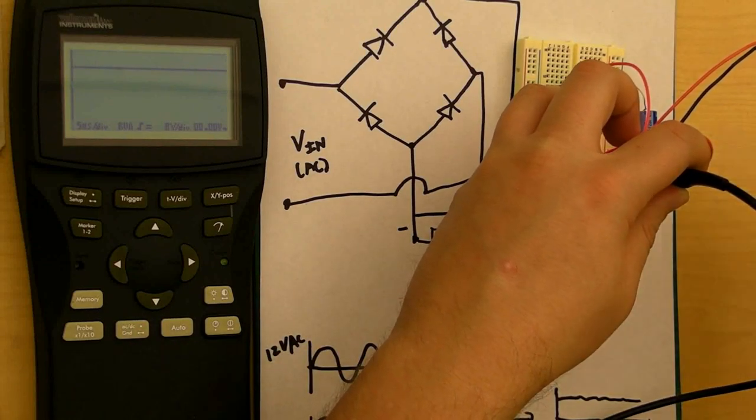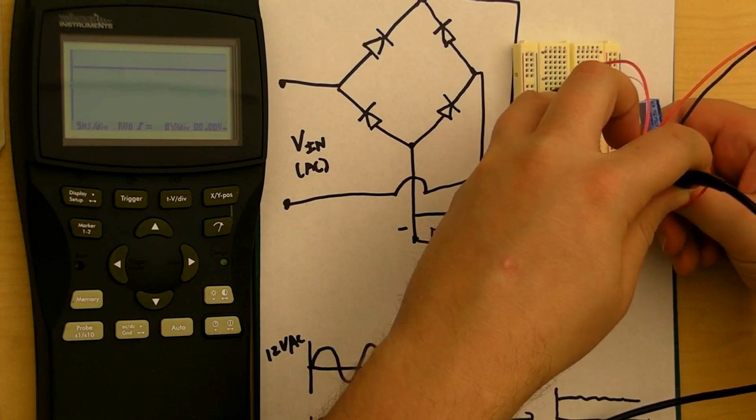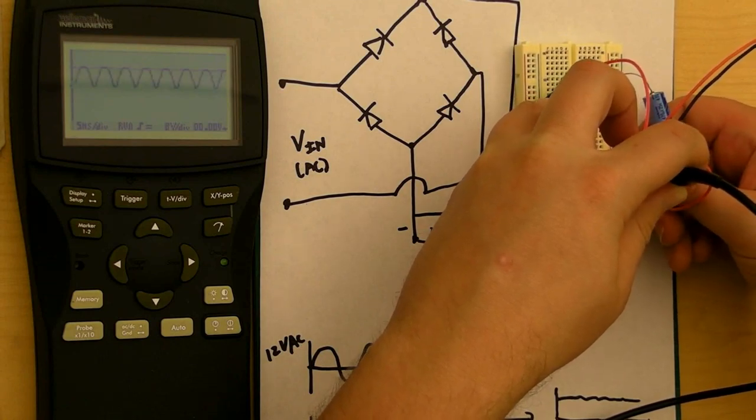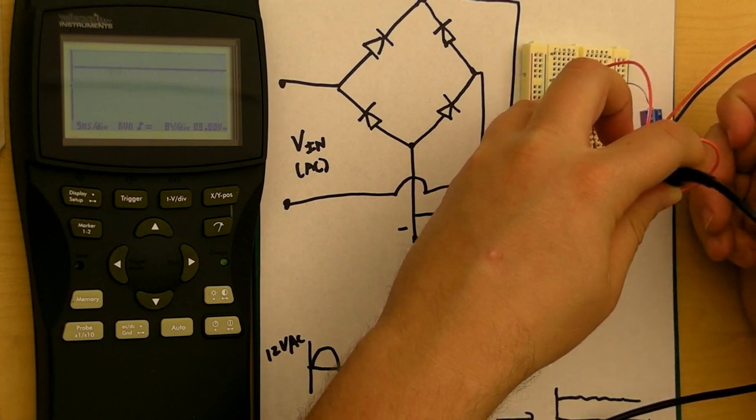Now the DC is actually showing - the scope was in a bad mode there. So we went from that bad ripple to having a constant voltage, which is exactly what we want.